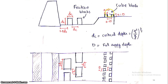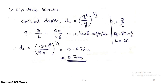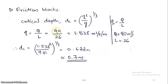For friction blocks: width equals dc, height equals dc, length equals dc, spacing equals dc. For cube blocks, all dimensions are 0.1D where D is full supply depth, and spacing is 1.1D. The critical depth dc is calculated as (q² / g)^(1/3). The discharge per unit length q is 40 divided by bed width 26 meters, giving 1.538 cumecs per meter. Therefore, critical depth dc equals (1.538² / 9.81)^(1/3) equals 0.622, approximately 0.7 meters.